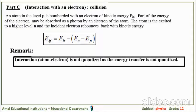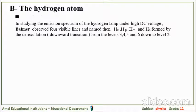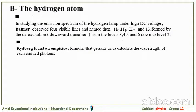Remark: interaction of an atom with an electron is not quantized, as the energy transfer is not quantized — the atom may absorb part of the energy. Now for the hydrogen atom: studying the emission spectrum, under high voltage, Balmer observed four visible lines named Hα, Hβ, Hγ, and Hδ, formed by the downward transitions from levels 3, 4, 5, and 6 down to level 2. Rydberg found an empirical formula by trial and error that permits calculation of the wavelength of the emitted photons.